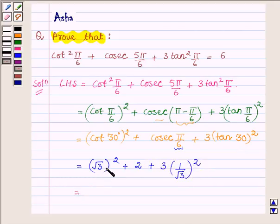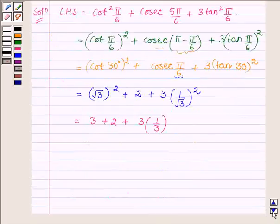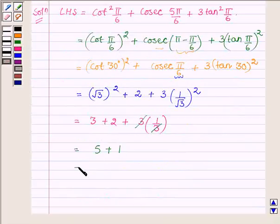This is further equal to: root 3 whole square is 3, plus 2, plus 3 into 1 upon 3, which is 1. So this gives us 3 plus 2 plus 1, which is equal to 6 — the right hand side of the given equation.